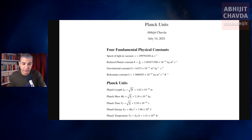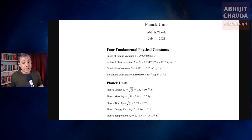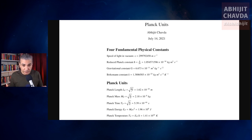In loop quantum gravity, the Planck length is the minimum scale at which space-time itself is quantized. In string theory, it is the scale of strings. In quantum mechanics, according to its laws, it is impossible to determine the position of a particle to a precision smaller than the Planck length. That is another example of the significance of the Planck length.